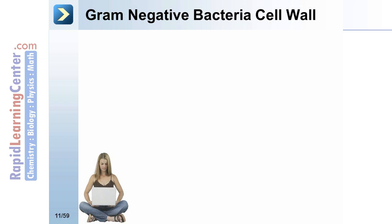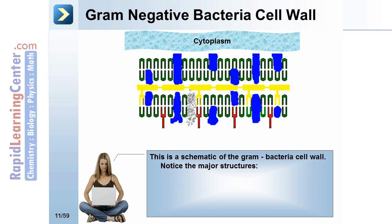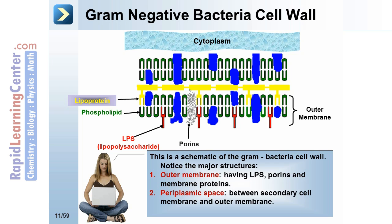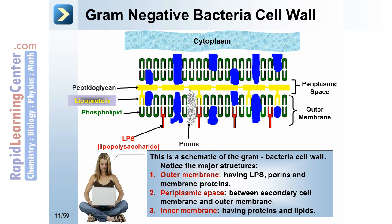Gram-negative bacteria cell wall. This is a schematic of the gram-negative bacteria cell wall. Notice the major structures: the outer membrane having LPS, porins, and membrane proteins; the periplasmic space between the secondary cell membrane and outer membrane; and the inner membrane having proteins and lipids. Notice, to orient yourself: the cytoplasm is on the inside, so the outer membrane faces the outside world, while the inner membrane faces the cytoplasm.